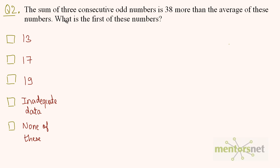The sum of three consecutive odd numbers is 38 more than the average of these numbers. What is the first of these numbers? Let us say the first odd number is x. Then the next consecutive odd number will be x plus 2, and the next one would be x plus 4.